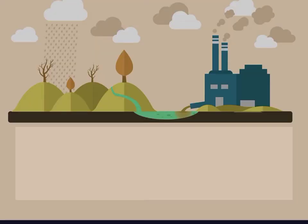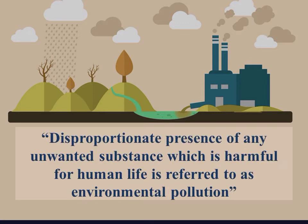But what exactly is this pollution? We will learn it through its definition. Disproportionate presence of any unwanted substance which is harmful for human life is referred to as environmental pollution. Disproportionate means excessive presence, and substance means material. So students, it means excessive presence of harmful materials that is harmful for human life is referred to as environmental pollution.